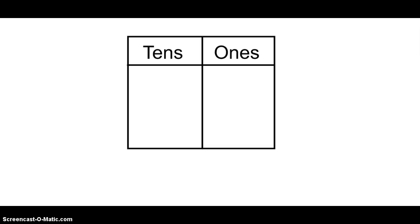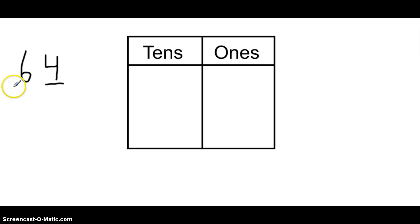Today we are going to go back and review ones and tens place. When I write a number like 64, it's telling me that there's a 4 in the ones place and a 6 in the tens place. If I were going to draw this number using ones cubes and a tens log, I would have four ones cubes and six tens logs.